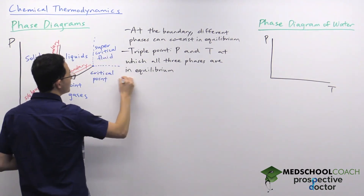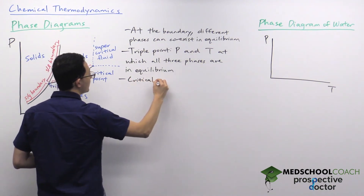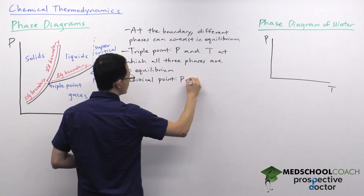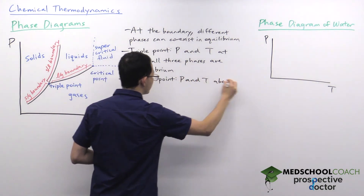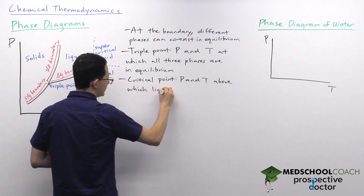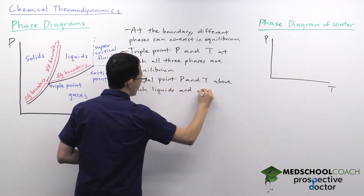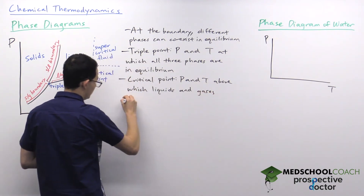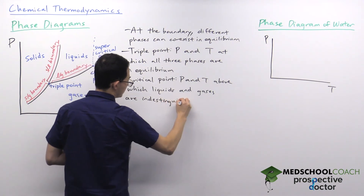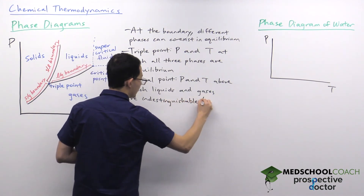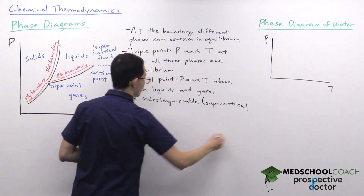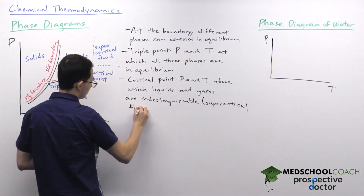The critical point is the pressure and temperature above which liquids and gases are indistinguishable, and above this point we instead have what we call supercritical fluid.